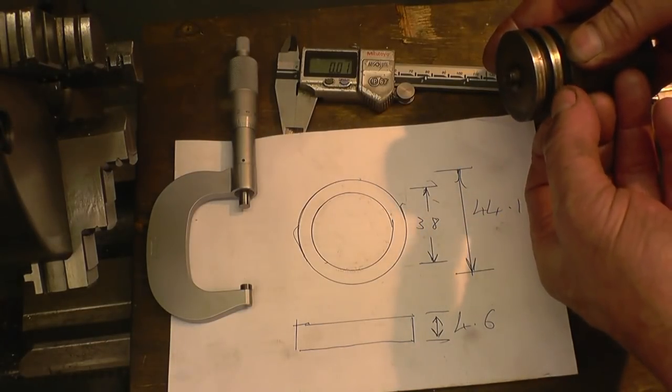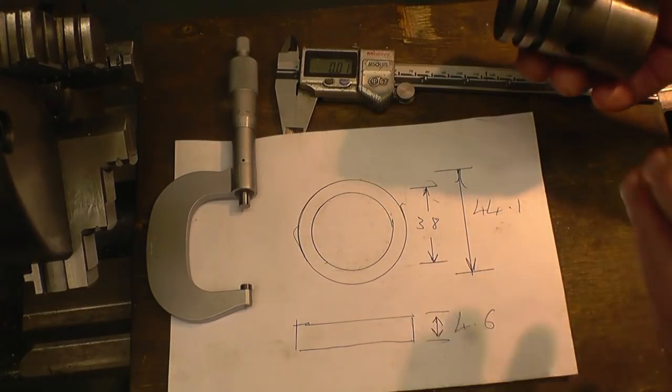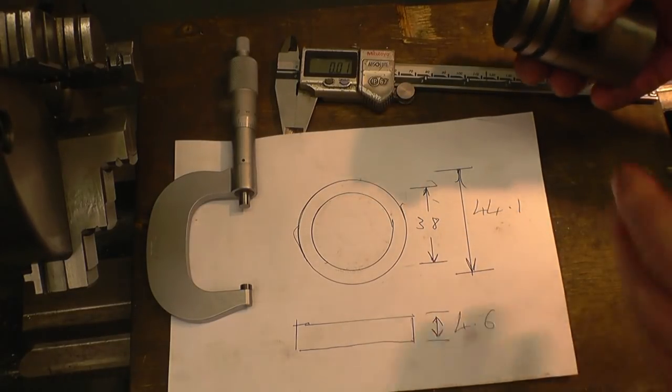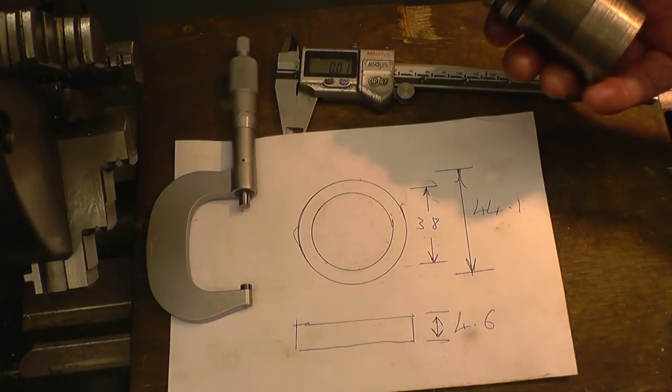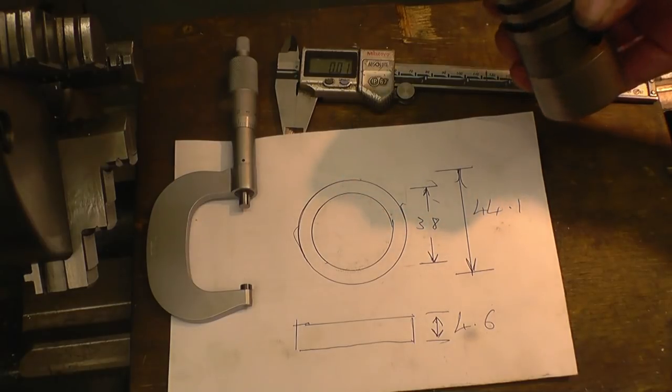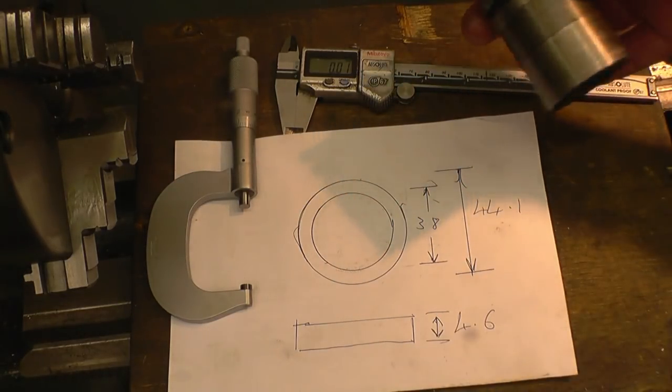That's the distance between the two lines on the ring grooves. That's an average because nothing is the same size - it's all within 0.01, 0.02 of a mil. I'm just going to go with what I've got and make rings to suit.